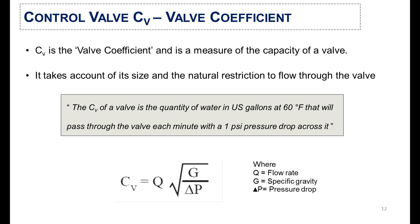The main component in control valve sizing is the valve coefficient, called Cv. The Cv is a measure of the capacity of a valve — it accounts for its size and the natural restriction to flow through the valve. Basically, the Cv of a valve is the quantity of water in US gallons at 60°F that will pass through the valve each minute with a one psi pressure drop across it. The formula to calculate Cv uses Q (flow rate), G (specific gravity), and ΔP (pressure drop).